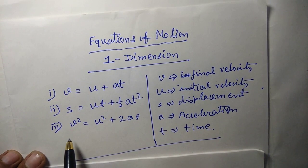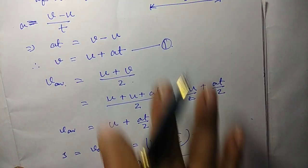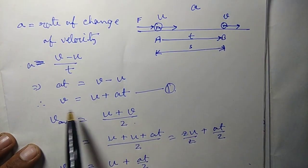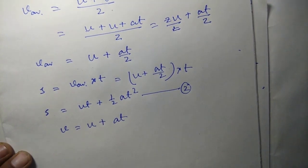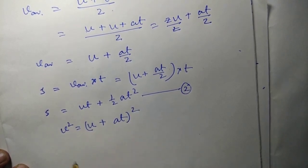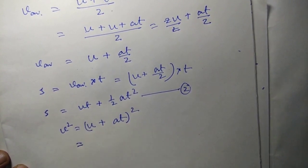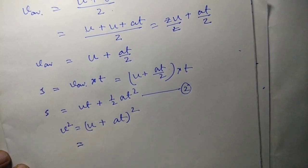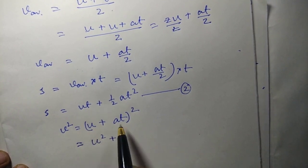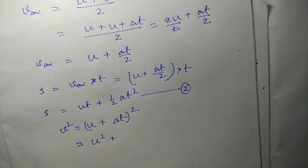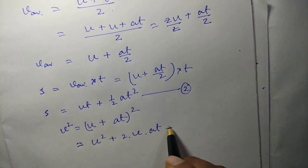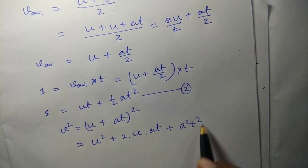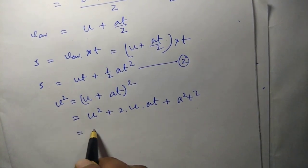Now it's time to prove the third equation, which is v square equals to u square plus 2as. To derive the third equation, we start with the first one: v equals to u plus at. If I square both sides, it becomes v square equals (u plus at) whole square. On the right hand side, applying the (a plus b) whole square formula, we get u square plus 2 times u times at plus a square t square.